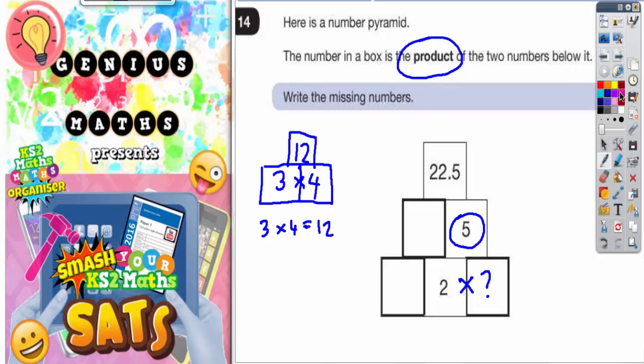What's worth knowing is that if you start with the number on top and divide by the number underneath, for example 12 divided by 4, you would get the other number on the bottom. So 12 divided by 4 equals 3, or 12 divided by 3 equals 4. This will help you fill in these numbers.